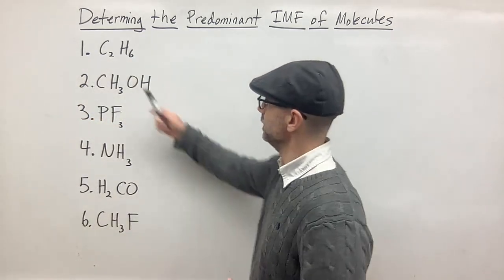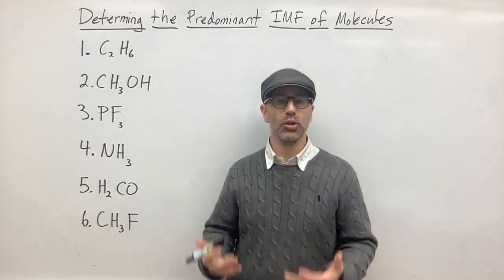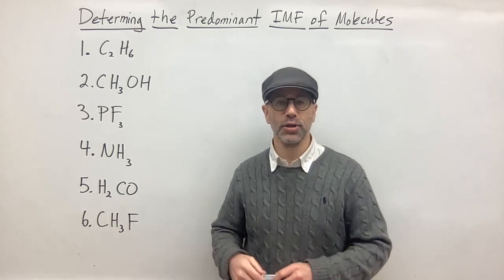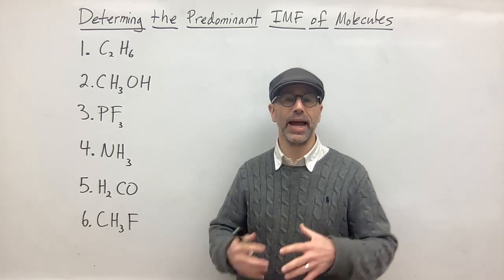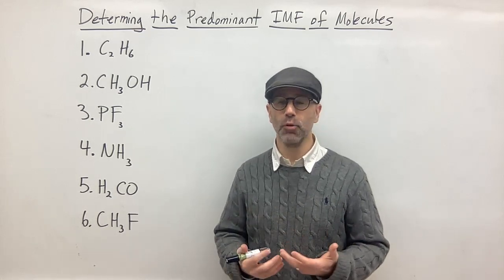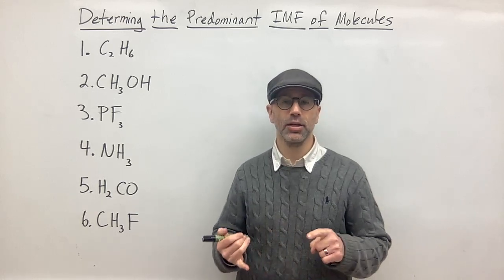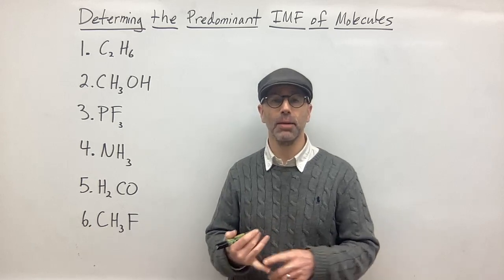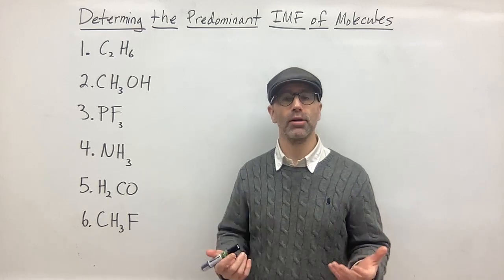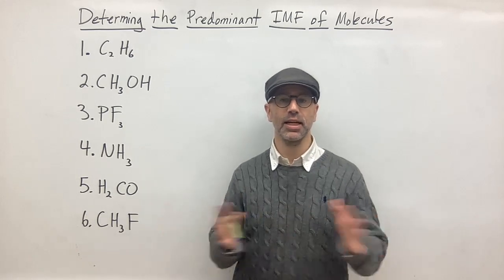Our first example is C2H6. The first thing you're going to do for these problems is draw the Lewis dot structure so you can see what it looks like, then determine the shape of the molecule, and from there determine the polarity. If it's a non-polar molecule, the only intermolecular force is London dispersion forces. If it's a polar molecule, you'll have London dispersion forces but also dipole-dipole, and dipole-dipole would be the predominant intermolecular force. Remember, all molecules have London dispersion forces because all molecules have electrons and you get that fluctuation of electron density in the molecule.